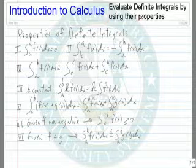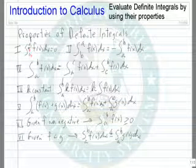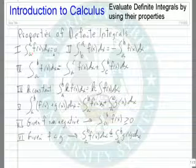We'll look at the properties of definite integrals. If we take the integral from a to a, notice the lower limit and the upper limit are the same. We wind up with the result of zero.